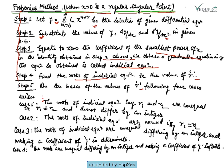Case one: r1 and r2 are unequal and do not differ by an integer. Case two: the roots of the indicial equation are unequal, meaning r1 ≠ r2, differing by an integer, and making a coefficient of y indeterminate. Case four: the roots are unequal, differing by an integer, and making a coefficient of y infinite.